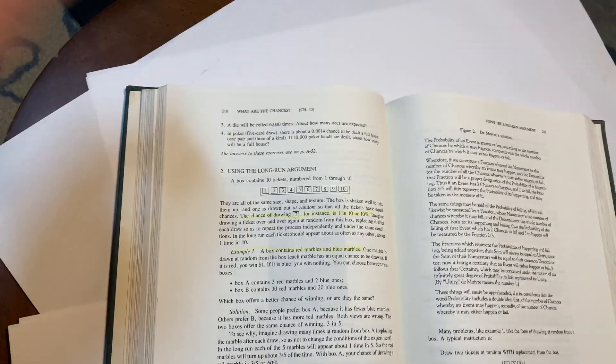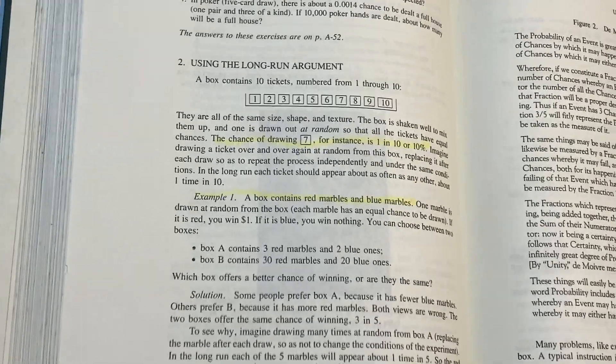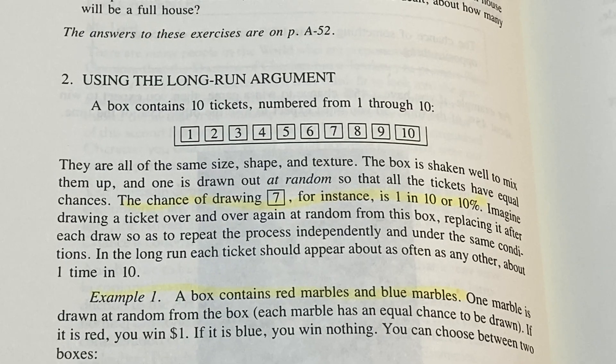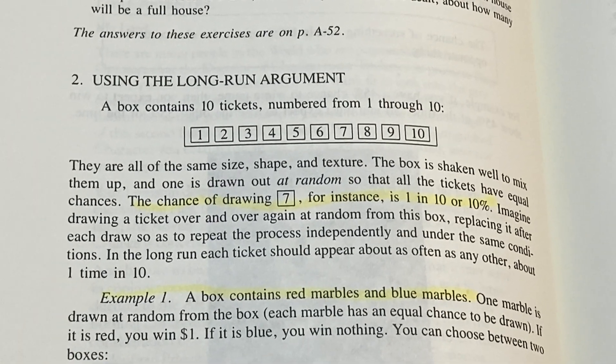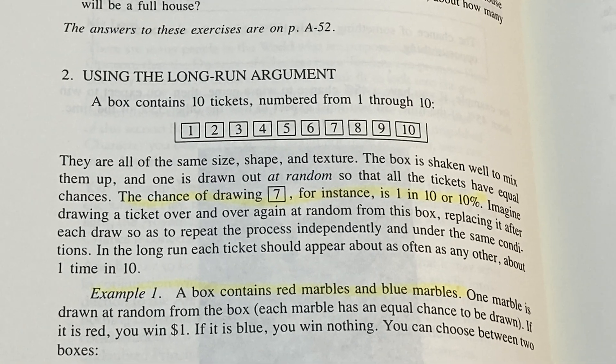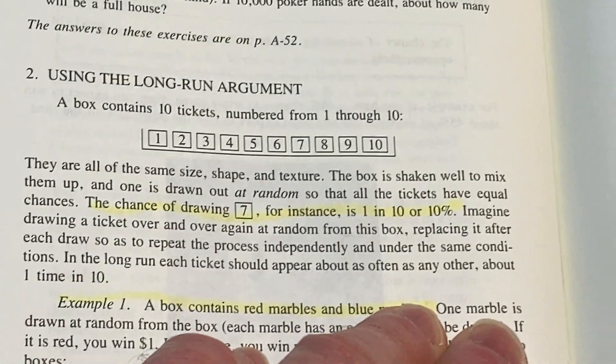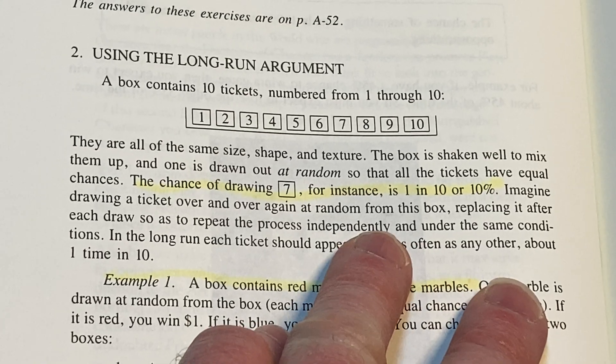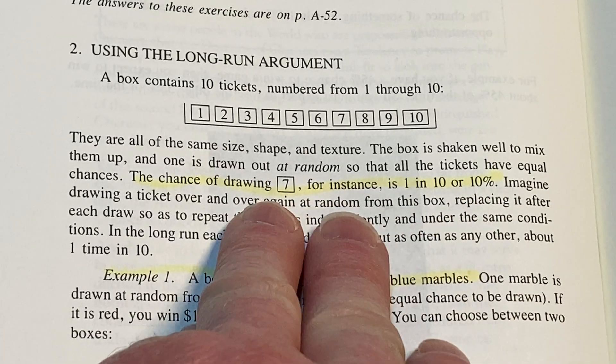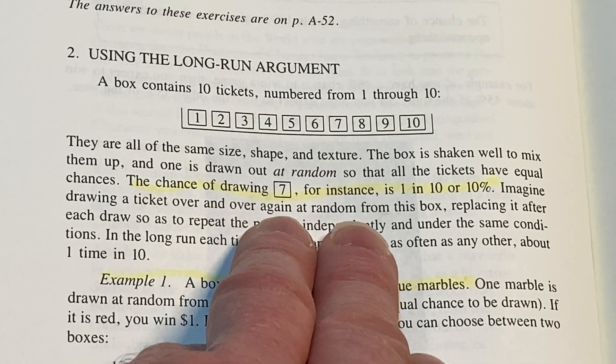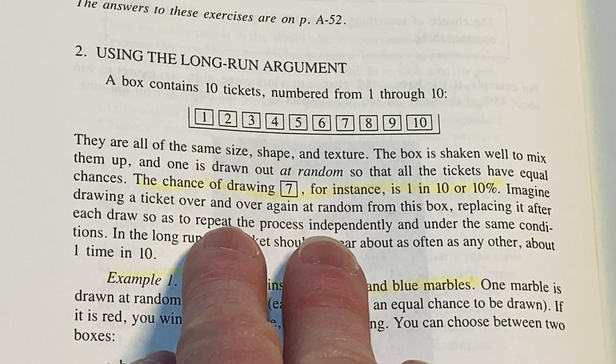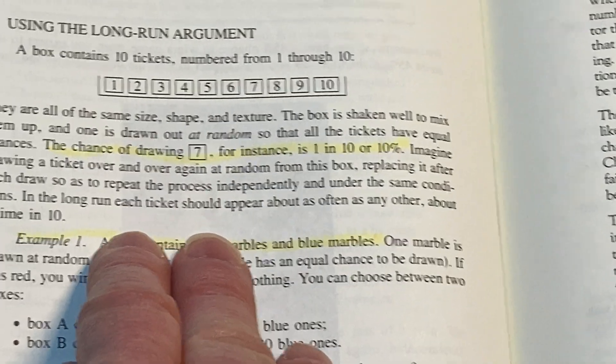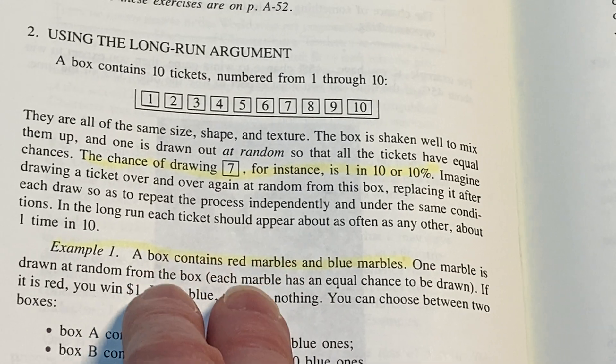Using the long-run argument. What's this? Let's look at this. This looks really interesting. It says here, a box contains 10 tickets numbered from 1 through 10. They are all the same size, shape, and texture. The box is shaken well to mix them up. And one is drawn out at random so that all the tickets have equal chances. The chance of drawing 7, for instance, is 1 in 10 or 10%. Imagine drawing a ticket over and over again at random from this box, replacing it after each draw so as to repeat the process independently and under the same conditions. In the long run, each ticket should appear about as often as any other, about one time in 10.